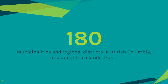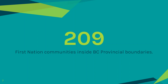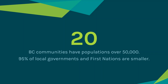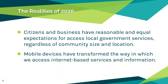In British Columbia, we have 180 municipalities and regional districts, plus about 209 First Nation communities inside BC provincial boundaries. Of nearly 400 communities, only about 20 have populations of over 50,000 people — ninety-five percent of local governments and First Nations are smaller. This is a province of small and rural communities. Those 20 local governments are really the ones that have the resources to do things on their own.